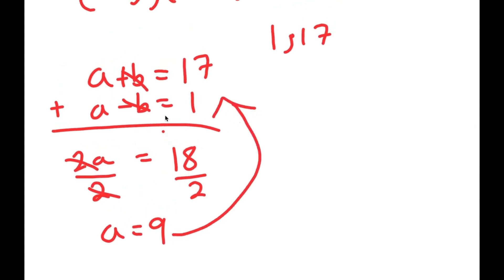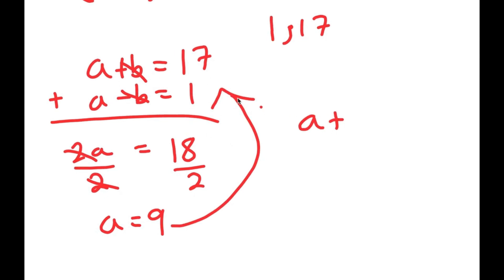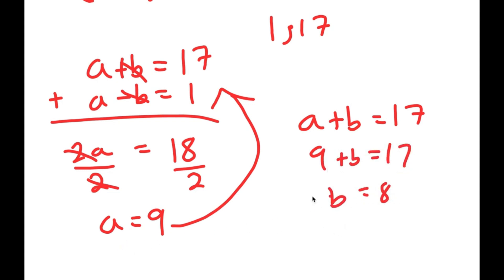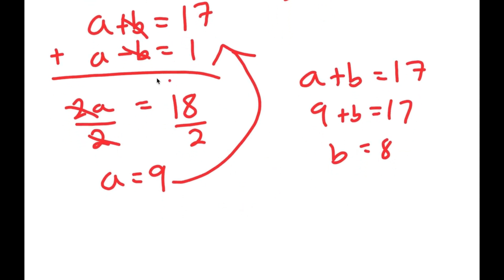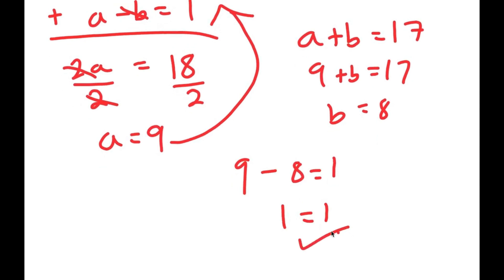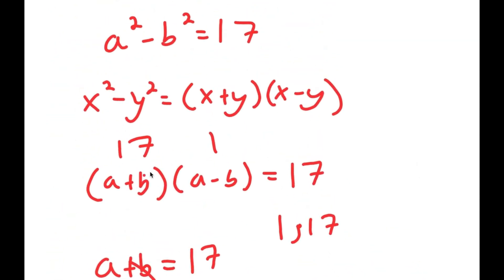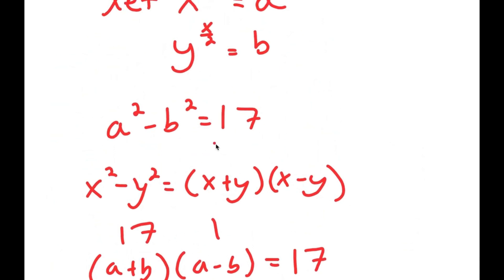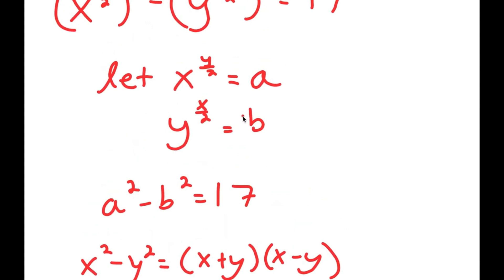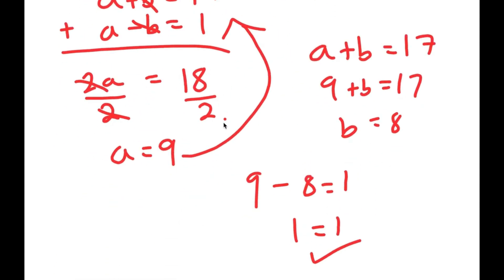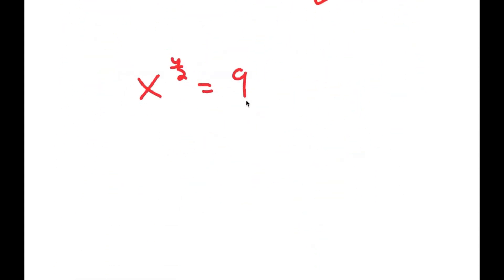Now I can plug a equals 9 back into a plus b equals 17. So 9 plus b equals 17, meaning b equals 8. So a equals 9 and b equals 8. We can check: a minus b is 9 minus 8, which equals 1. Now, since we let x to the power of y over 2 equal a and y to the power of x over 2 equal b, we have x to the power of y over 2 equals 9 and y to the power of x over 2 equals 8.